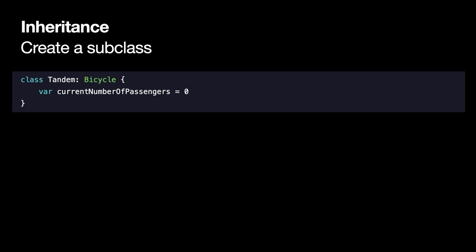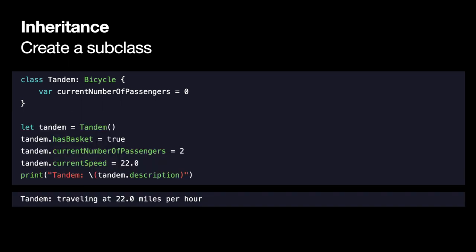Let's take it a step further and create a class named Tandem as a subclass of Bicycle. It's important to note that classes in Swift get an empty init if the class has default values for all properties — you don't have to write other inits. We set up a Tandem instance with a basket, 2 passengers, and currentSpeed of 22. When we print the tandem description we get 'traveling at 22 miles per hour'. The 'description' method was inherited all the way from Vehicle.